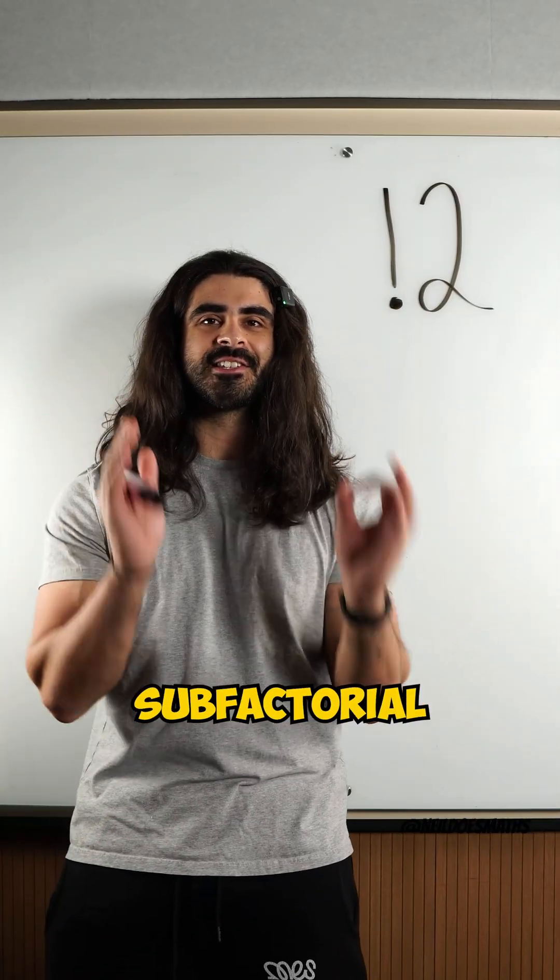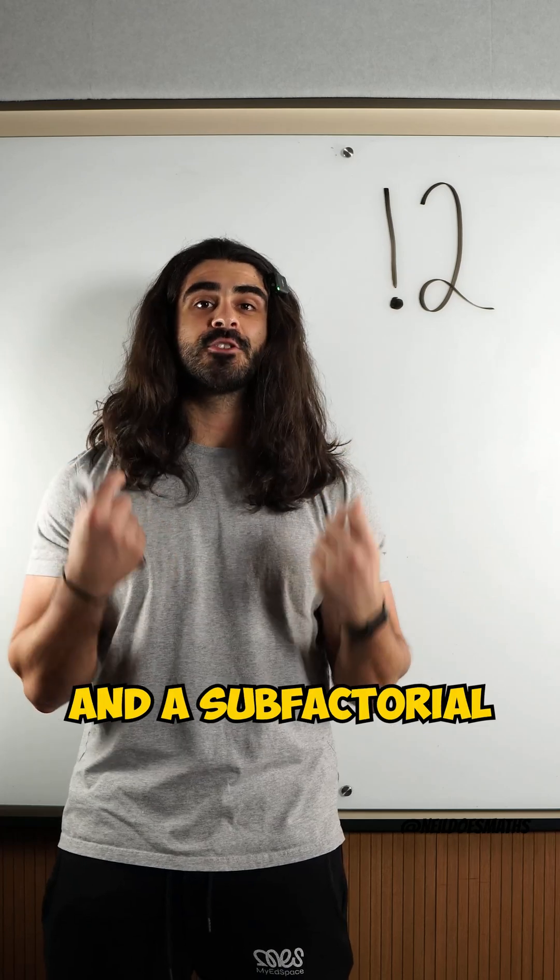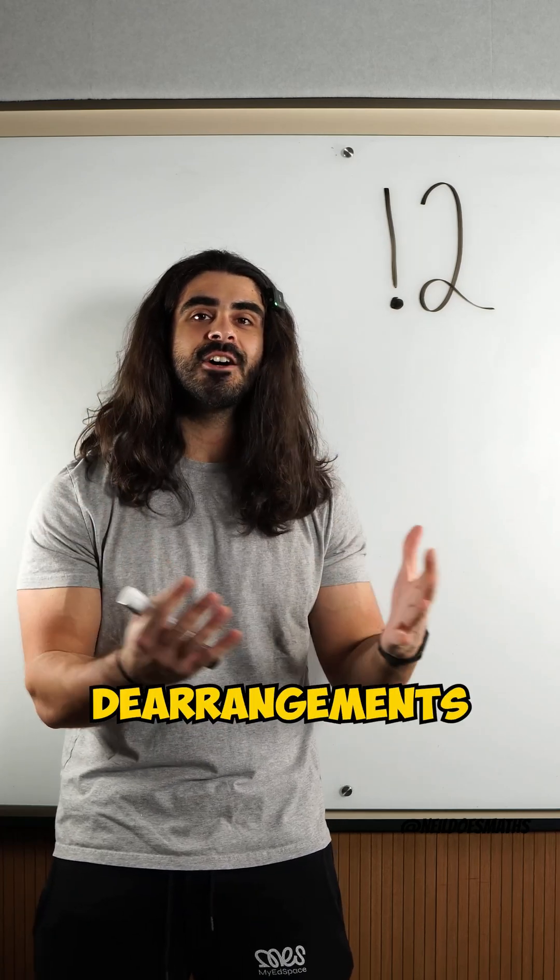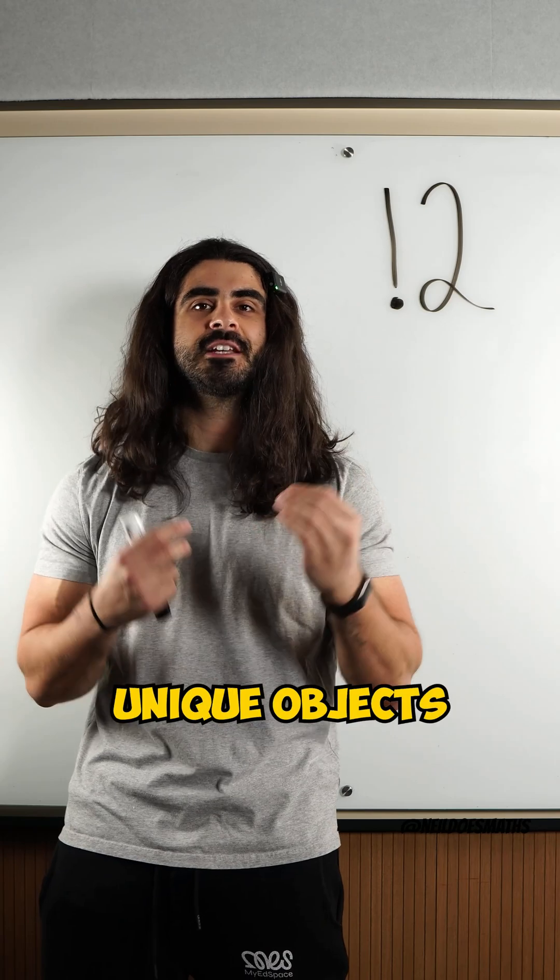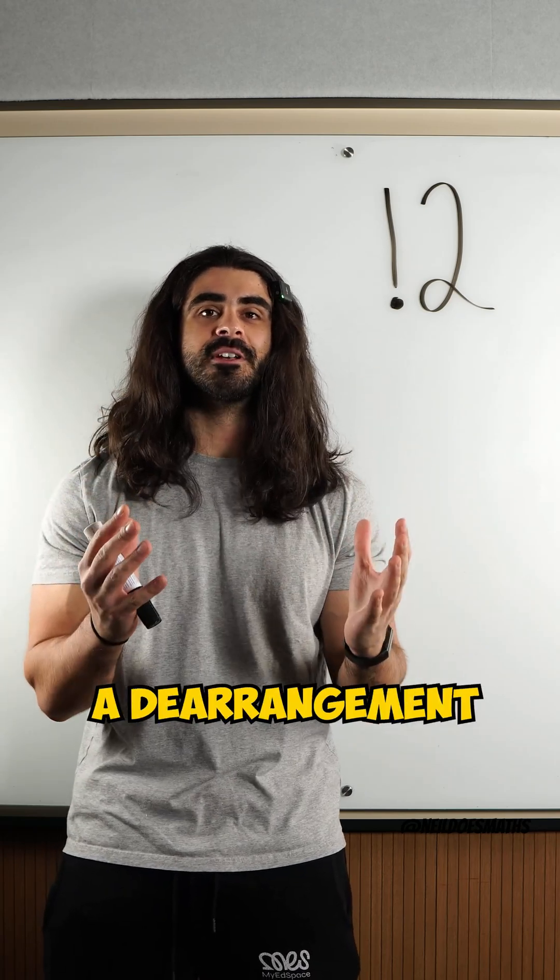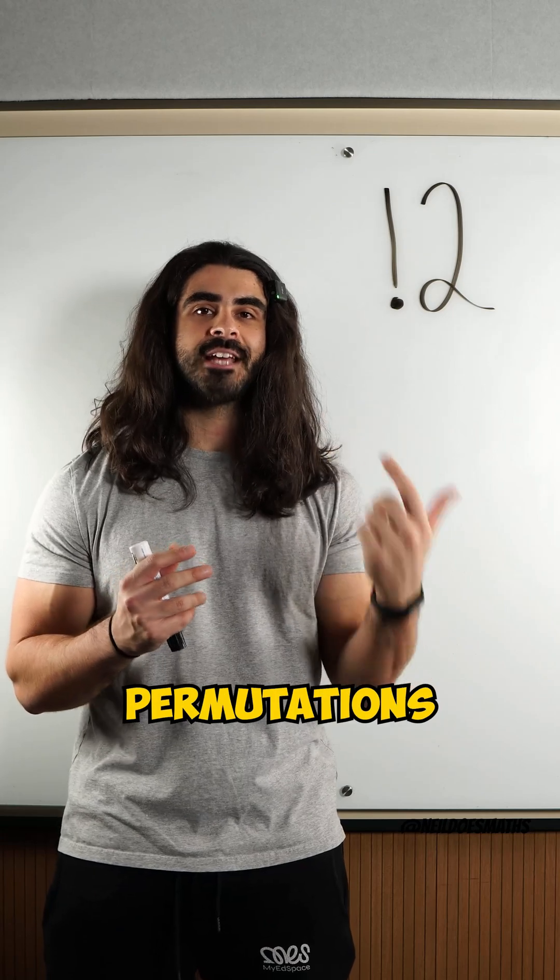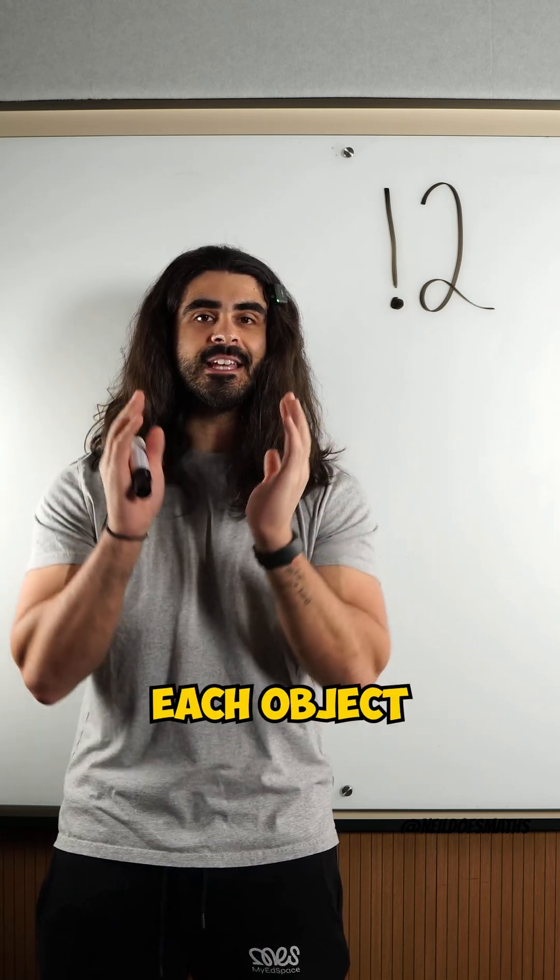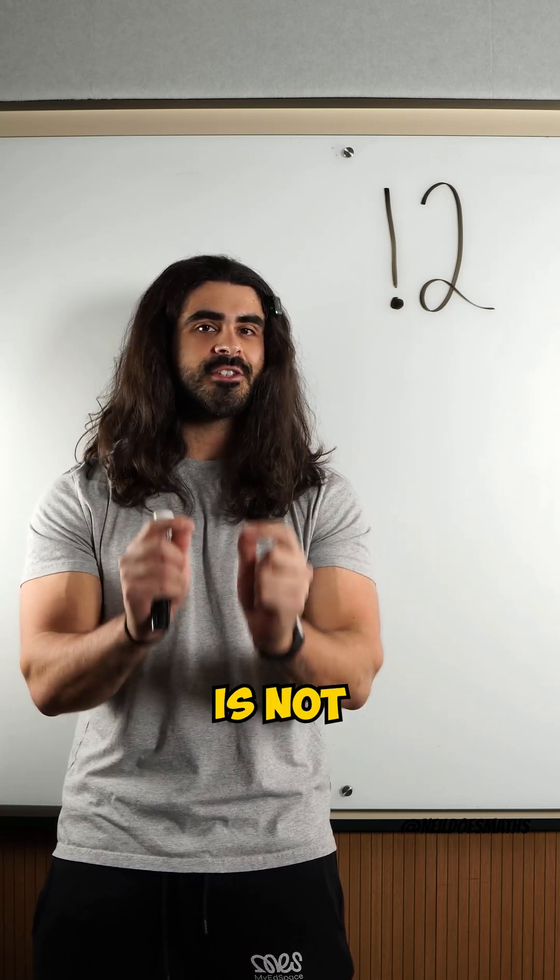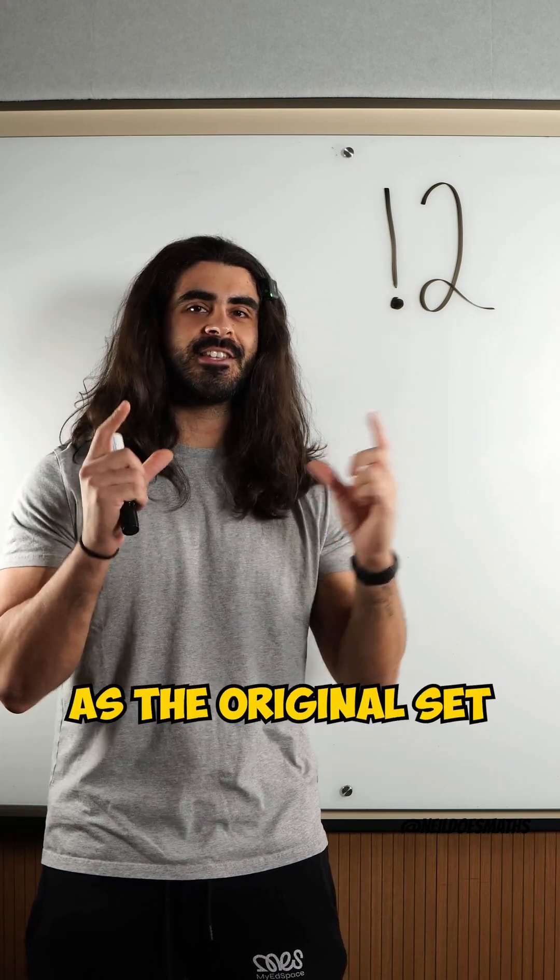This is known as a subfactorial, and a subfactorial tells us the number of derangements for a set of unique objects. A derangement is the number of permutations whereby each object is not in the same position as the original set.